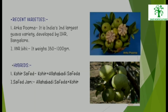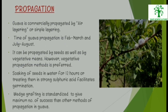Recent Varieties: 1. Arka Putna: It is India's second largest Guava variety, developed by IIHR Bangalore. 2. Viernard Bihi: It weighs 350 to 1,200 grams. Hybrids: Some of the hybrids of Guava are Kohit Safed and Safed Jam.